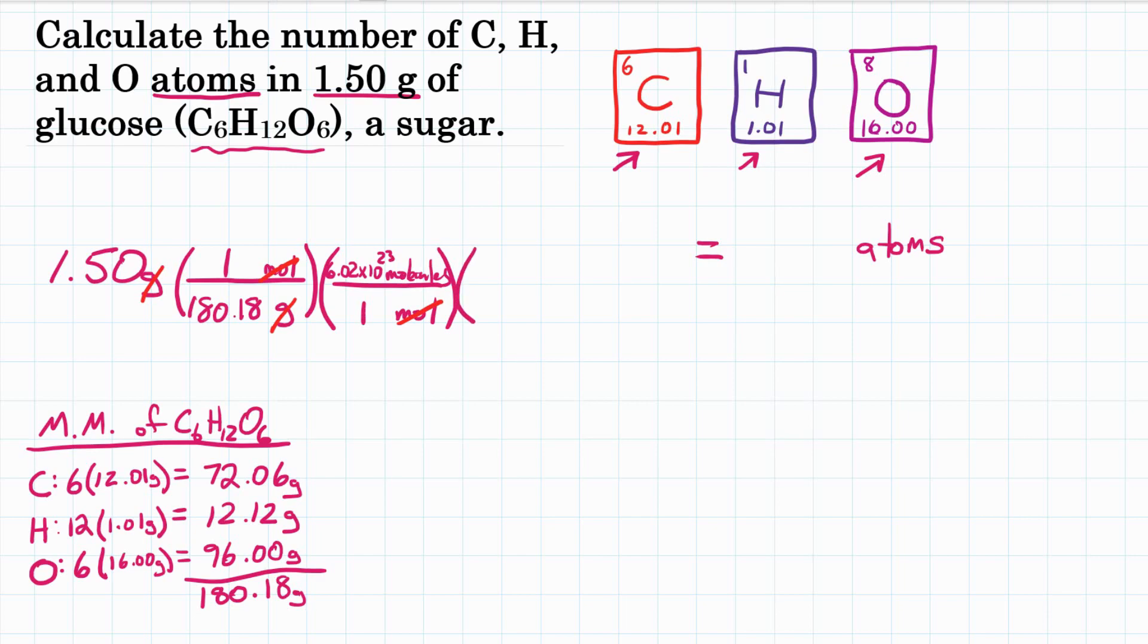But we want individual atoms. So we need one more conversion where molecules is on the bottom and atoms is on top. We're looking at C6H12O6. For every 1 glucose, that's 6 carbons plus 12 hydrogens plus 6 oxygens. For every 1 molecule, that's 24 atoms. 1 molecule goes on the bottom and 24 atoms goes on top. Canceling out our units, molecules goes away, and we're left with total number of atoms.